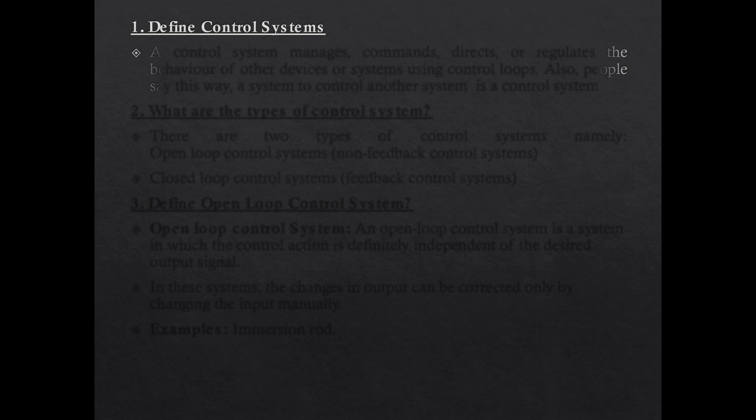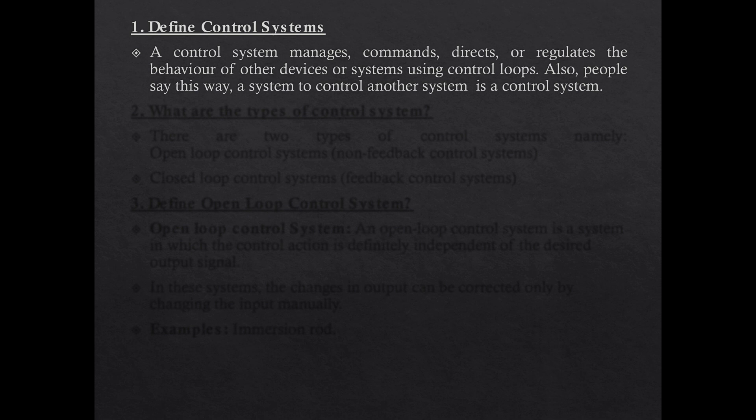Define control system. A control system is one which can manage, command, direct, or regulate the behavior of other systems or devices using control loops. To make it very simple, a system that can control another system is called a control system.